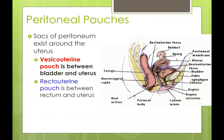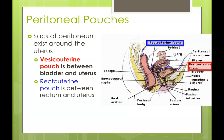We have two peritoneal pouches to know — sacs of peritoneum that exist around the uterus. Oriented with the pubic symphysis, urinary bladder, uterus, and rectum posteriorly, the first pouch is found between the urinary bladder and the uterus. The other pouch is the recto-uterine pouch, formed between the rectum and the uterus.